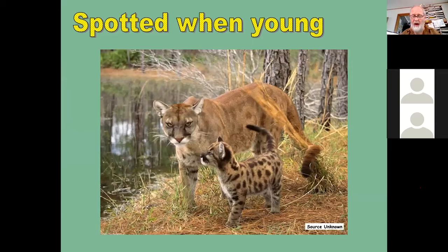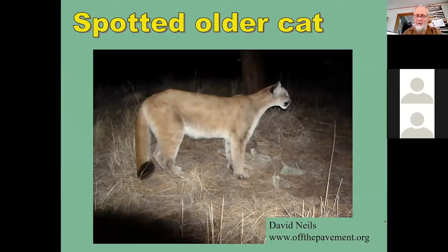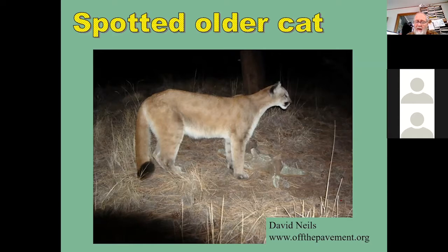When cougars are young, they are spotted. You often hear that spots disappear when they grow up, but that's not always true. This mother is still quite spotted, and this big male down in Colorado is still quite spotted as well. Cats in colder climates have longer hair and shed more, which may help them lose the spots, but spots can be retained into adulthood. This is a full-blown adult cat — one of David Neal's photographs of a big male.